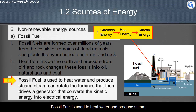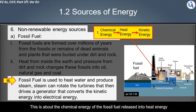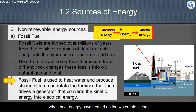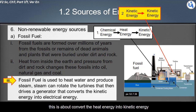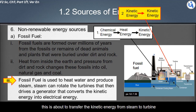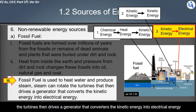Fossil fuel is used to heat water and produce steam. The chemical energy of the fossil fuel is released as heat energy, which heats up the water into steam — converting heat energy into kinetic energy. The steam rotates the turbines, transferring kinetic energy from steam to turbine. The turbines then drive a generator that converts the kinetic energy into electrical energy.